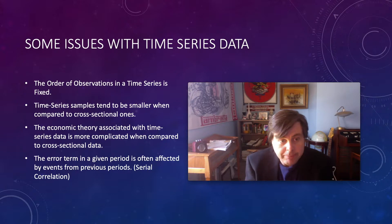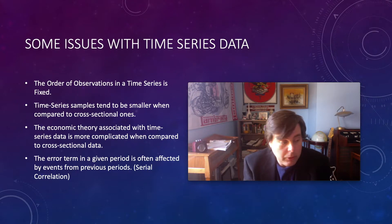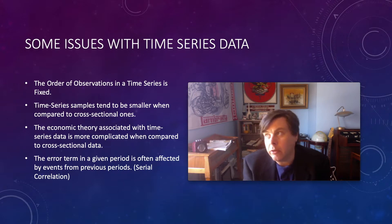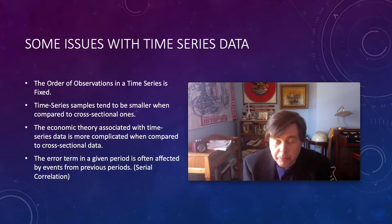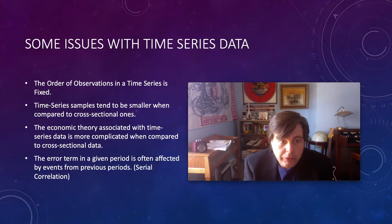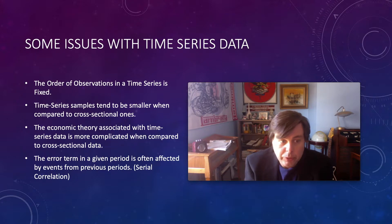Second, time series samples tend to be smaller compared to cross-sectional ones. For example, with annual GDP we get one observation per year, whereas with cross-sectional data — like building a demand curve — we would hope to have thousands and thousands of observations.